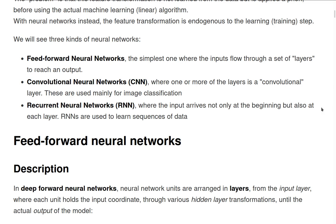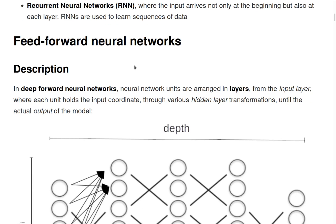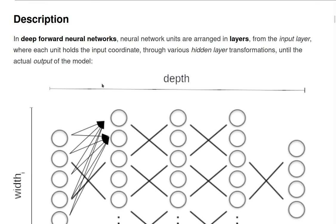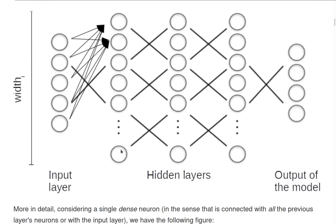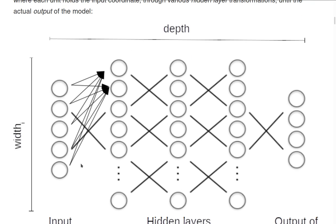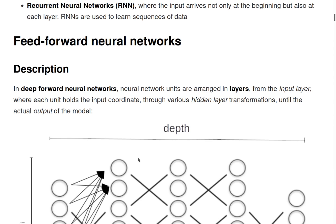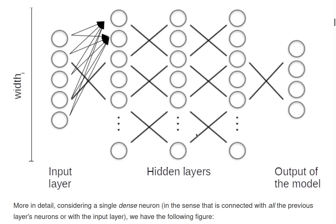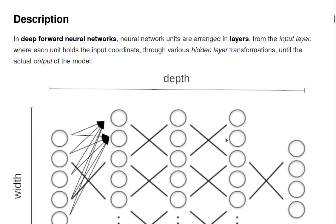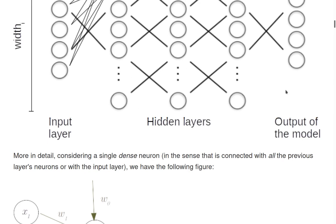So let's move to the first type, the feedforward neural network. As I said, the neural networks units are arranged in layers here, from the input layer through various hidden layers that perform the transformations, and finally we arrive to the output of the model.